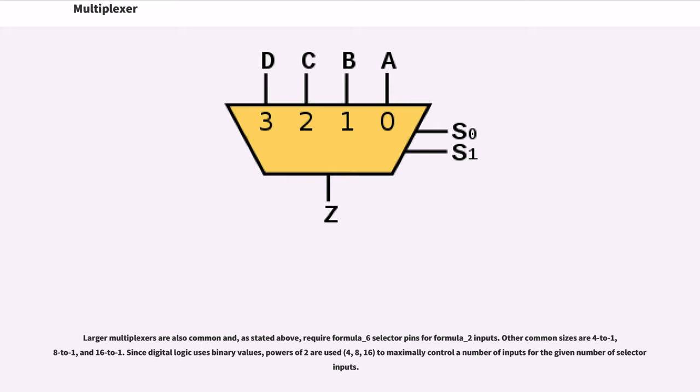Larger multiplexers are also common and, as stated above, require formula underscore 6 selector pins for formula underscore 2 inputs. Other common sizes are 4 to 1, 8 to 1, and 16 to 1. Since digital logic uses binary values, powers of 2 are used to maximally control a number of inputs for the given number of selector inputs.